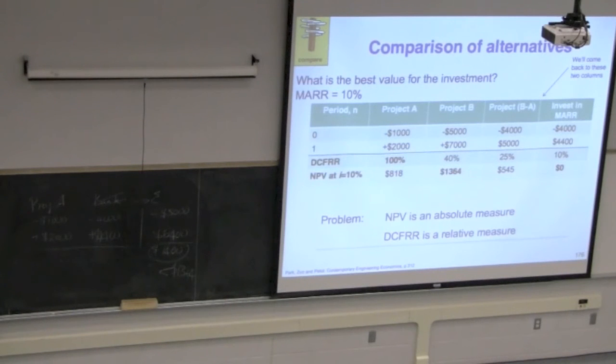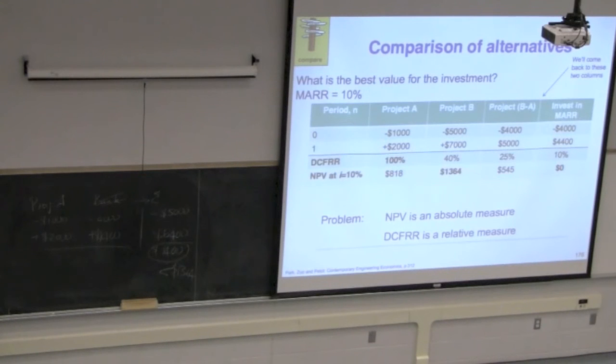You want to spend as little as possible with the highest return. But if you have to spend more, you want to make sure your return on spending more still exceeds MARR. There will be a point where you can spend more but not get the money back in terms of your minimum acceptable rate of return.